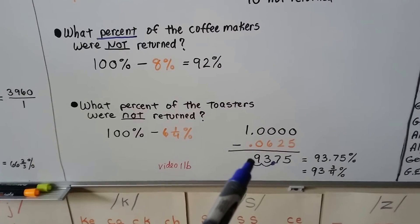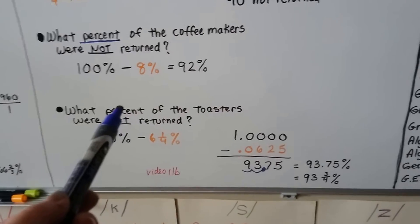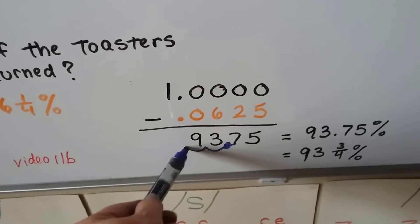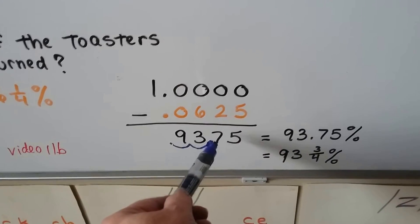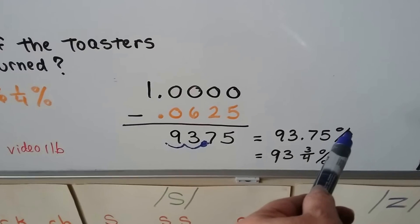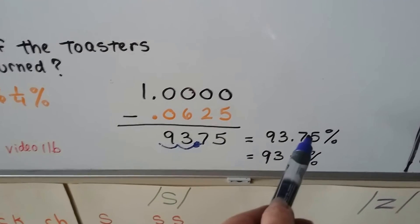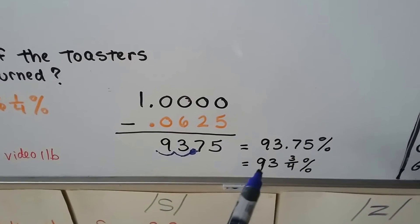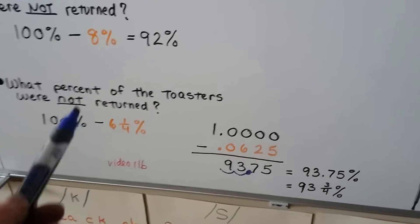Quickly on a calculator, we get .9375. And because it's asking for a percent, we move that point from here two hops to the right and get 93.75. Now we can put on the percent sign. We can also write it as 93 and 3/4 percent because .75 is 3/4, isn't it? So we have 93 and 3/4 percent were not returned.